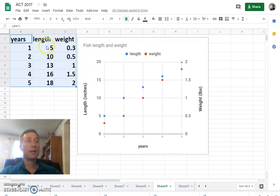Let's say you have measurements of the weight and length of a fish over five years and you want to know after years six and seven. We can graph these just so we can see what's going on.